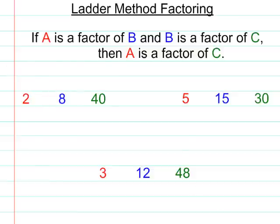Since we see here that 2 is a factor of 8 and 8 is a factor of 40, we're guaranteed to know that 2 goes into 40. 2 is going to be a factor of 40 as well. Similarly, 5 is a factor of 15 and 15 is a factor of 30. That guarantees that 5 is a factor of 30. And again, we see that 3 is a factor of 12, 12 is a factor of 48, so 3 is a factor of 48.